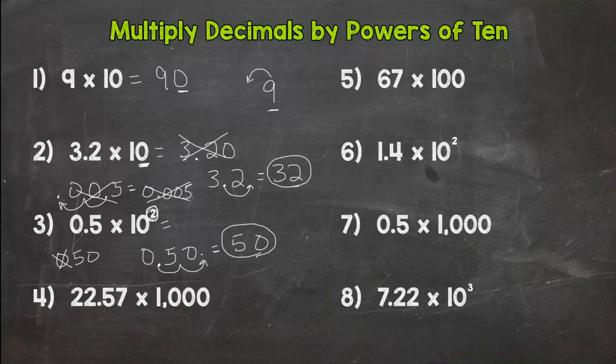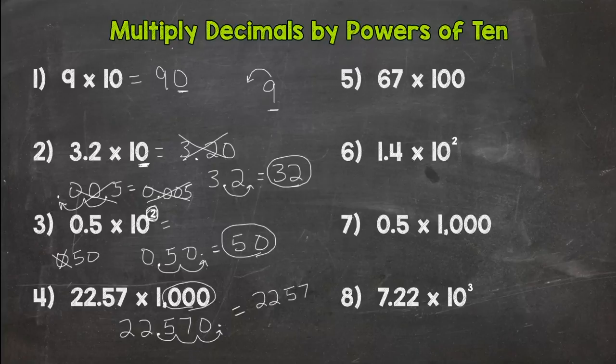So let's go to number 4 here. We have 22 and 57 hundredths times 1,000. So we check our number of 0s. We have 3. That means we need to move everything 3 spots to the left to put them into the correct place value. So 1, 2, 3. Decimal here, fill with a 0. So our answer is 22,570.